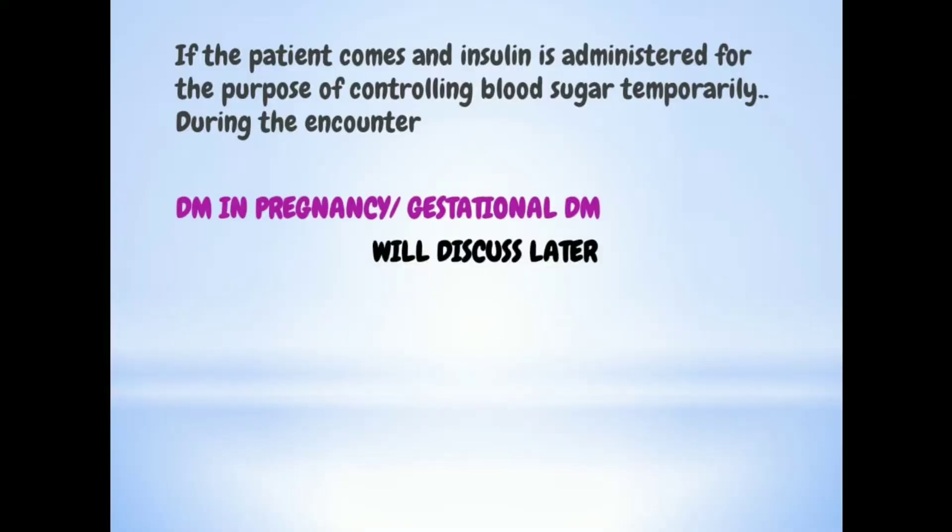So the sequencing is: first, the type of DM; second, whether the patient is insulin-dependent (Z79.4) or oral hypoglycemic-dependent (Z79.84). However, if a patient comes in as an emergency due to high blood sugar and the doctor administers insulin only to reduce it temporarily, we do not code Z79.4 in that case — it is not a long-term use situation.